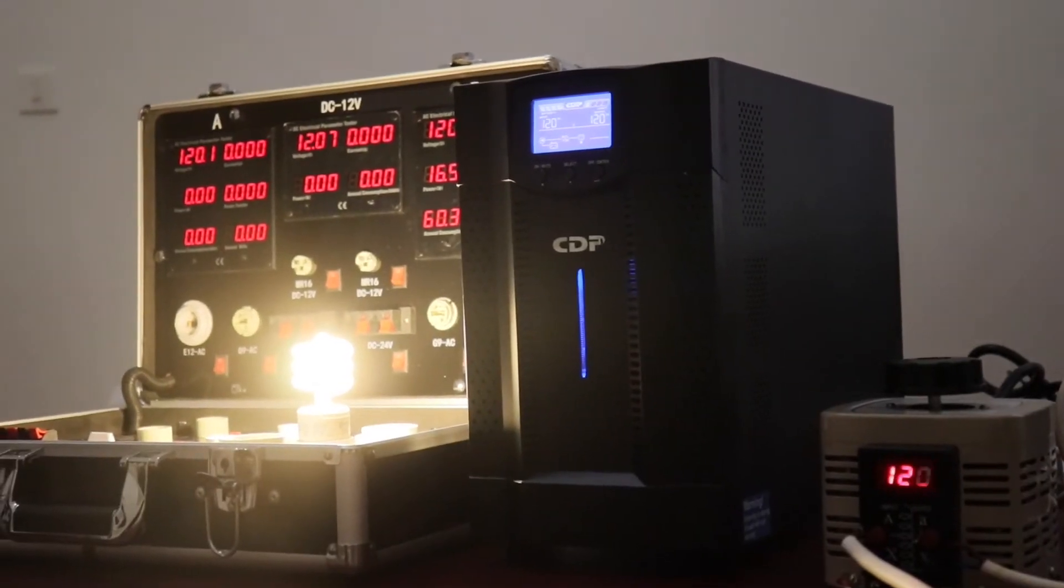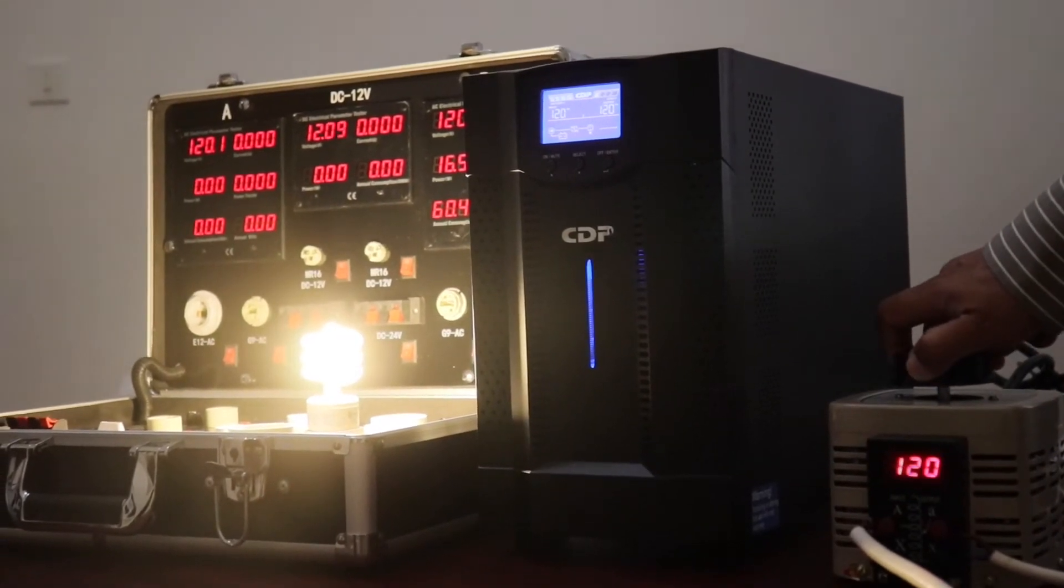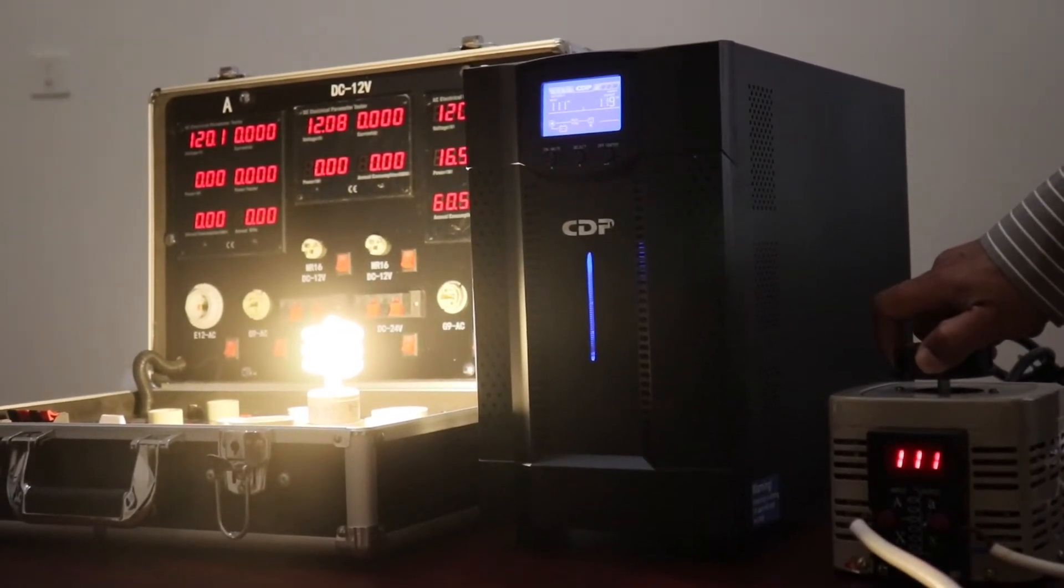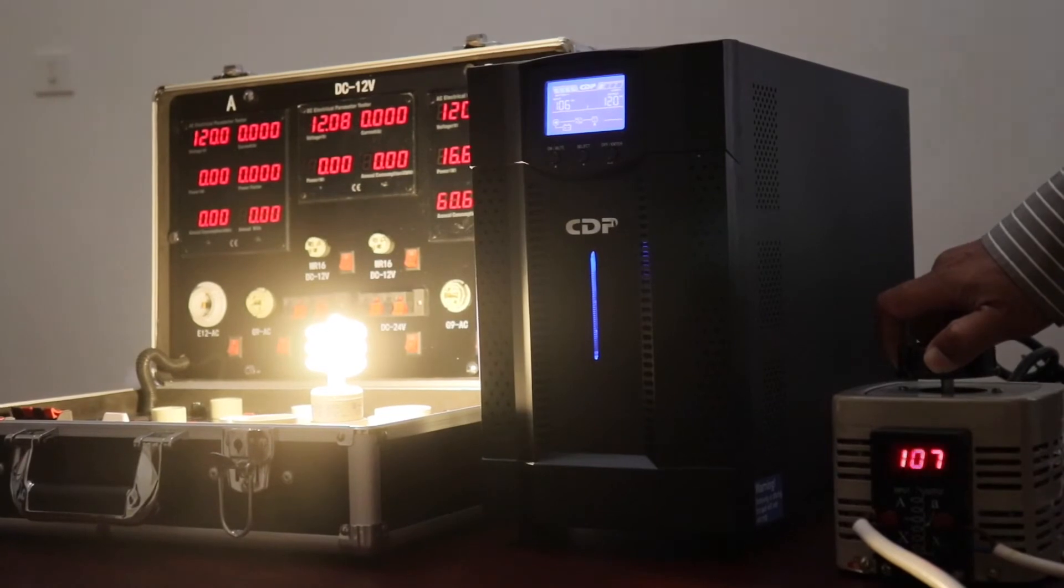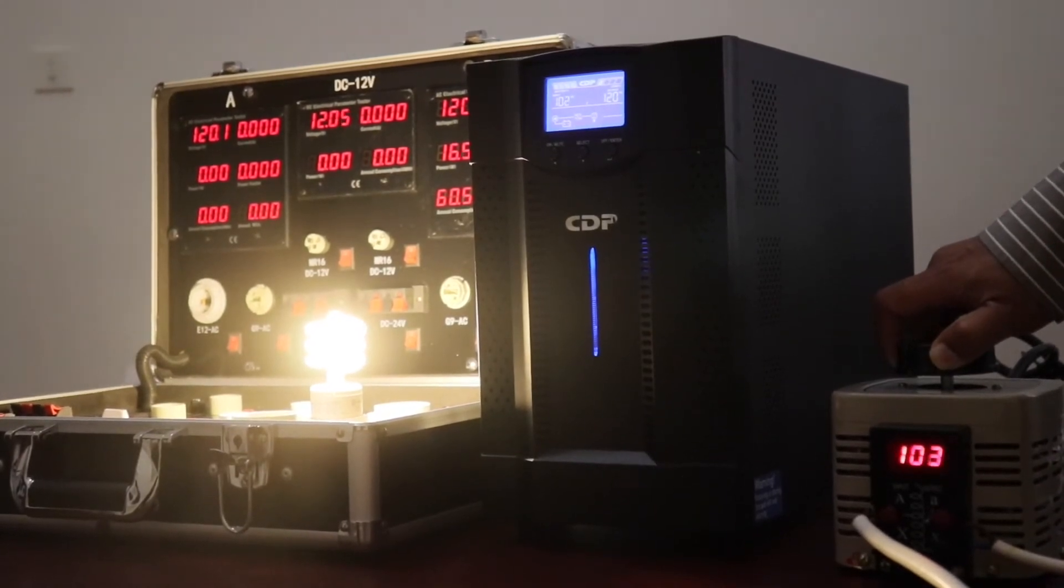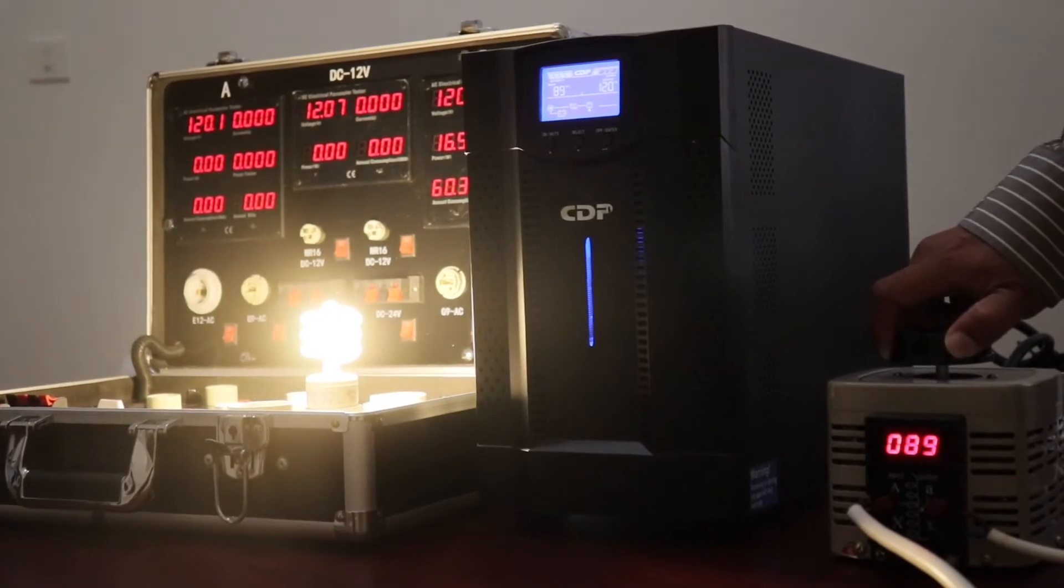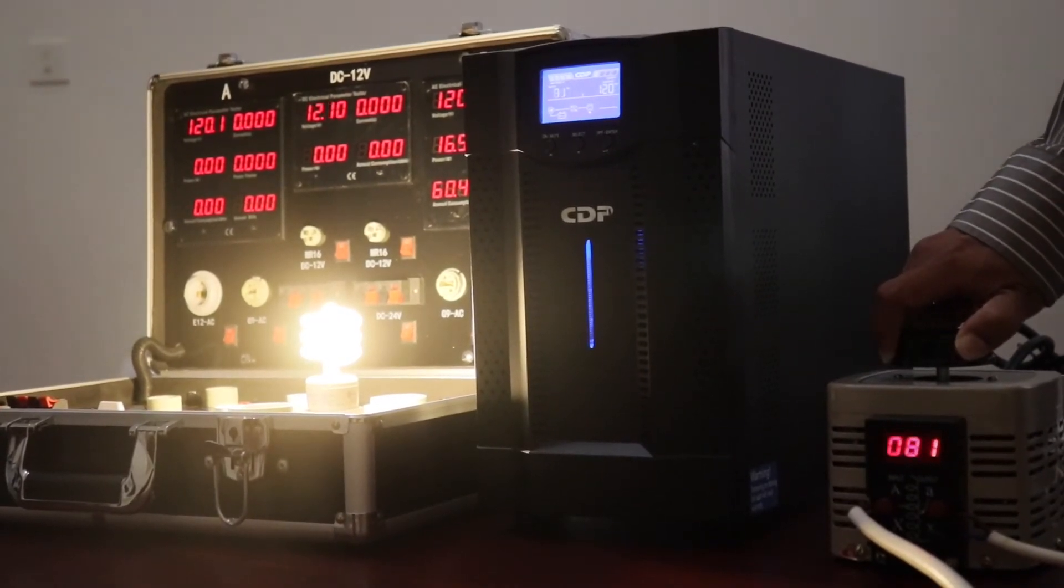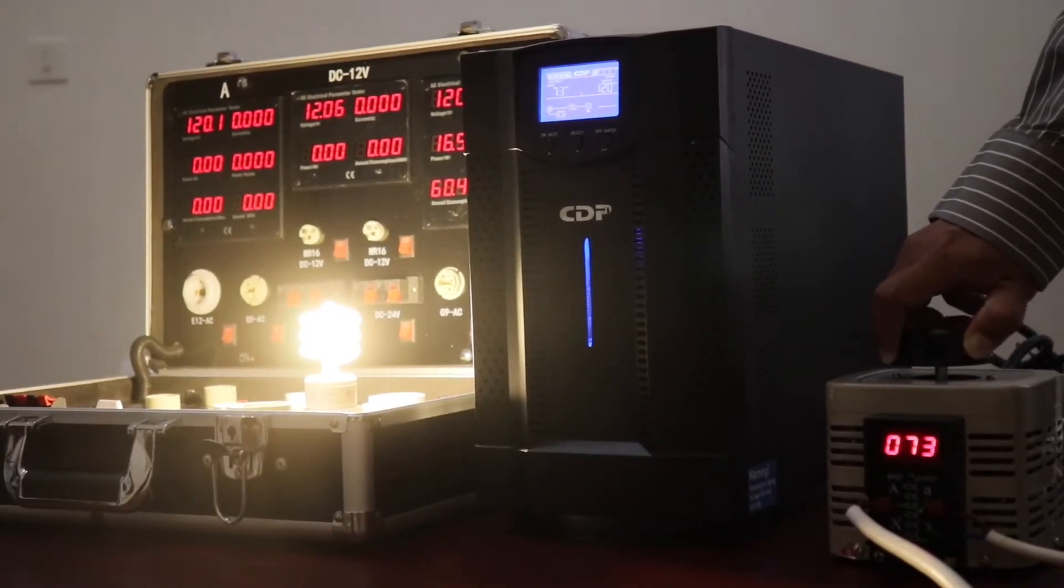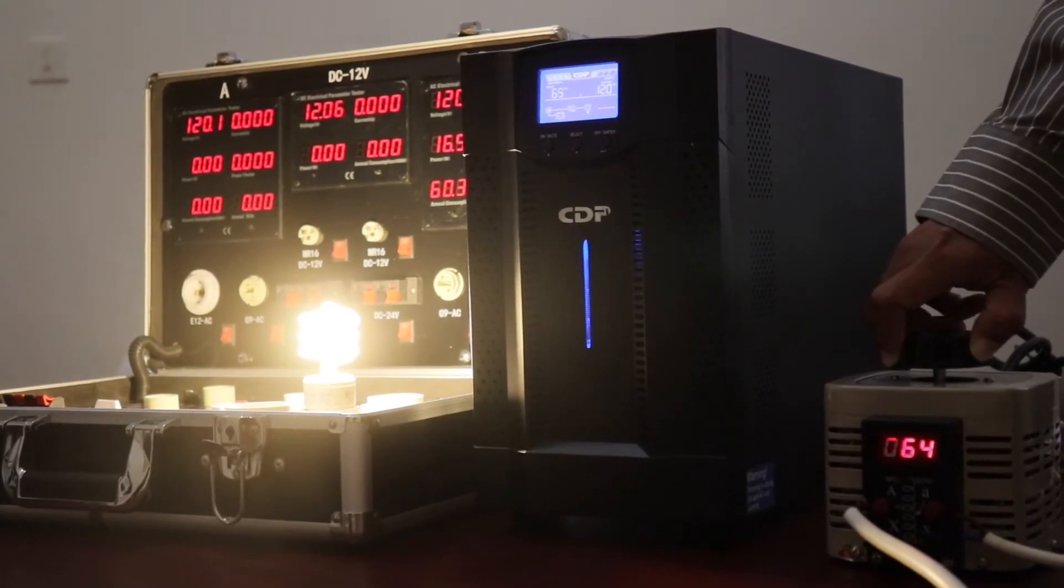Now, let's repeat this test with an online, or what is also referred to as a double conversion UPS. The output of the online UPS is not dependent on the electricity supply. As the voltage is turned down, the output voltage remains stable. This online unit is at all times providing clean, stable power.